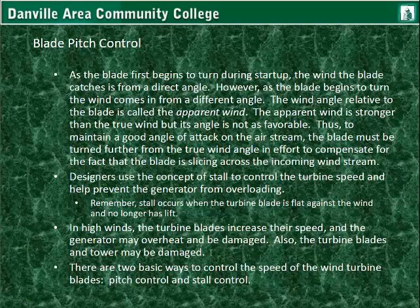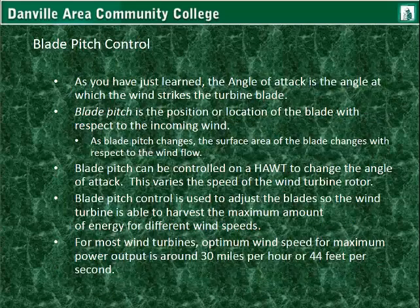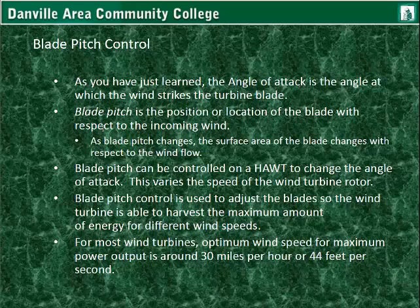There are two basic ways to control the speed of wind turbine blades: by pitch control and by stall control. The angle of attack is the angle at which the wind strikes the turbine blade. Blade pitch is the position or location of the blade with respect to the incoming wind — kind of its angle. As blade pitch changes, the surface area of the blade changes with respect to the wind flow.